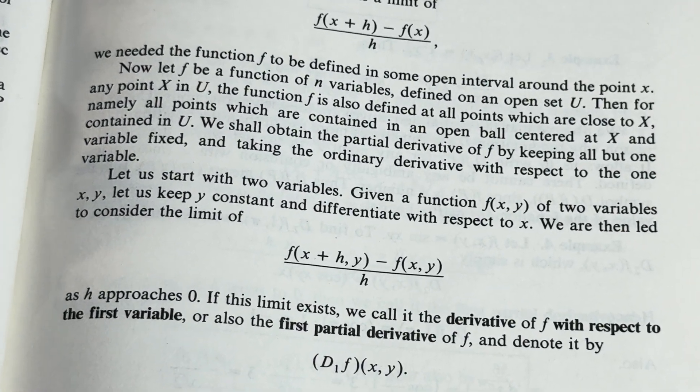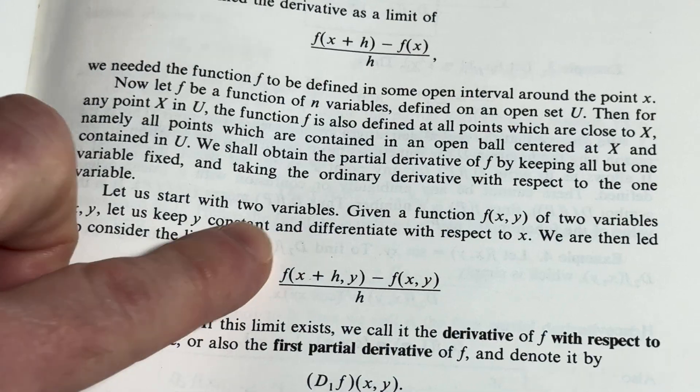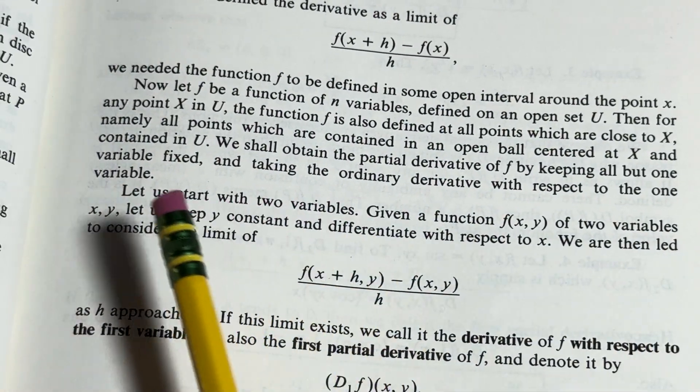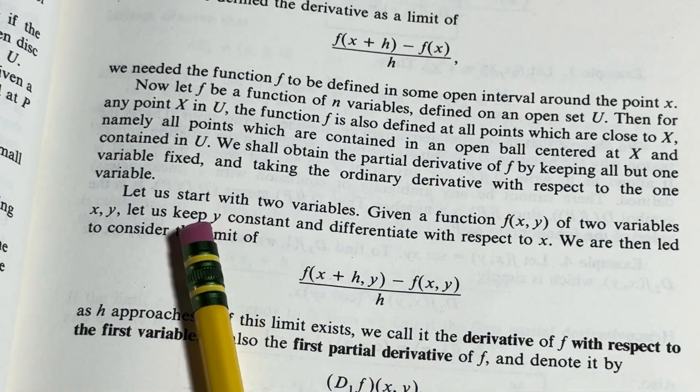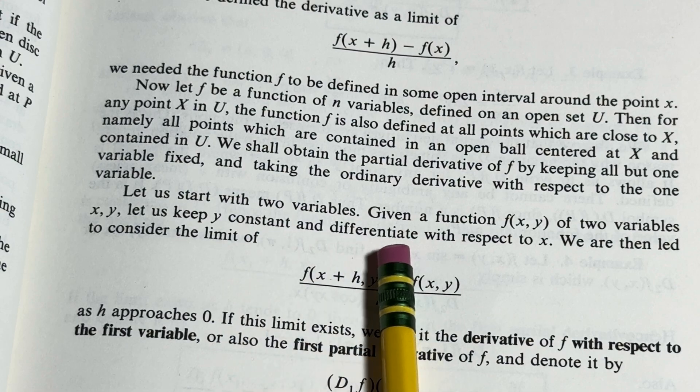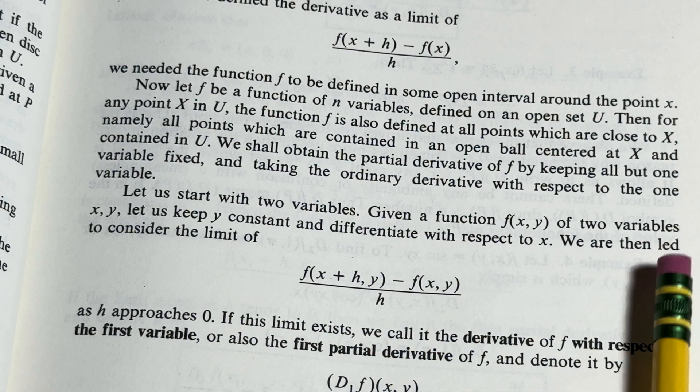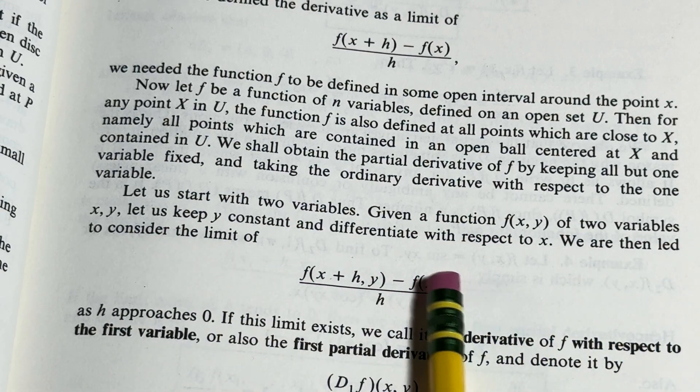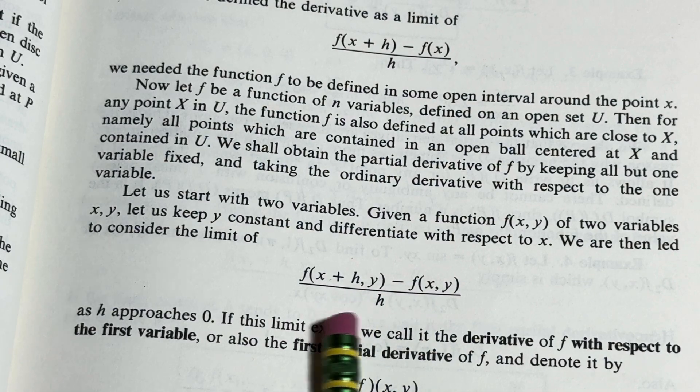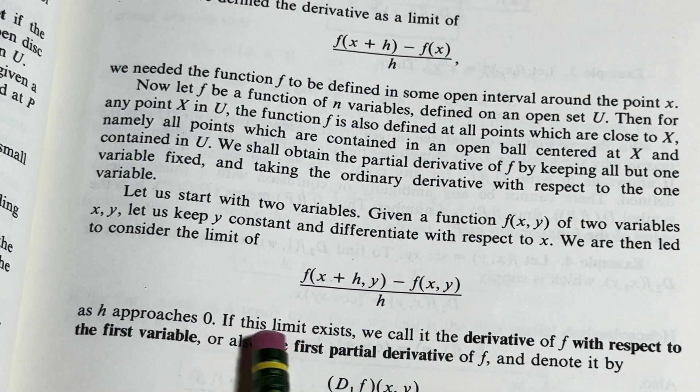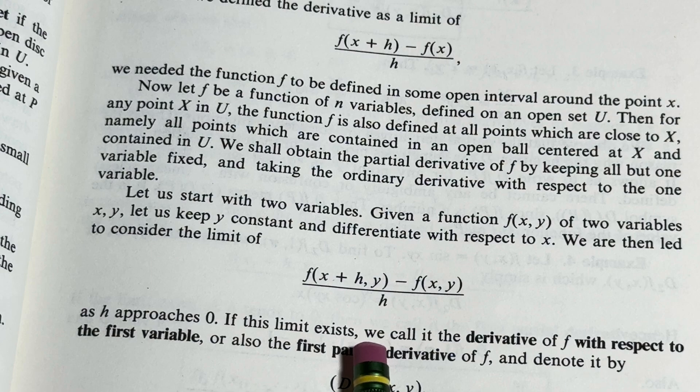It says, let us start with two variables. Given a function f of x, y of two variables x and y, let us keep y constant and differentiate with respect to x. We are then led to consider the limit of this expression here. This is a difference quotient. As h approaches zero, if this limit exists,